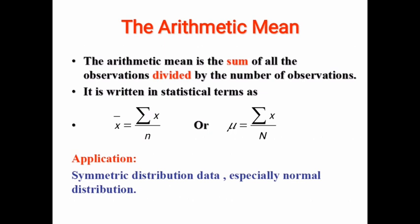The arithmetic mean is the sum of all the observations divided by the total number of observations. You just need to sum all the values in your sample and then divide by the sample size for the sample arithmetic mean, denoted by x-bar. For the population arithmetic mean, sum all values in the population and divide by the total number of observations, denoted by mu. The arithmetic mean is the preferred measure of central tendency for symmetrical distribution, particularly the normal distribution.